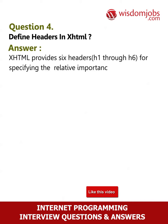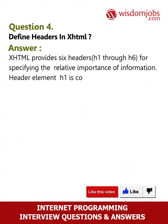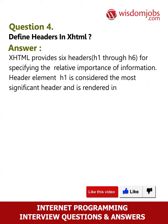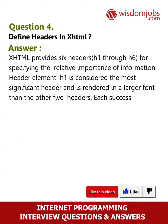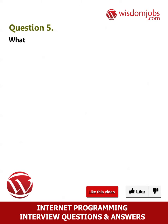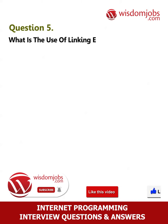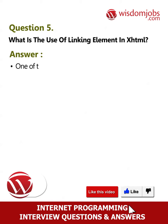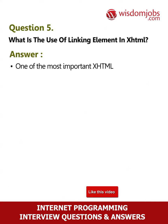Question 4: Define headers in XHTML. Answer: XHTML provides six headers, h1 through h6, for specifying the relative importance of information. Header element h1 is considered the most significant header and is rendered in a larger font than the other five headers. Each successive header element, h2 through h6, is rendered in a progressively smaller font.